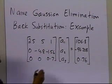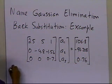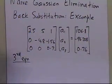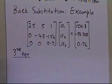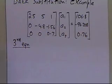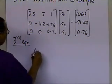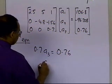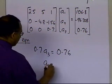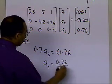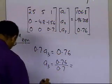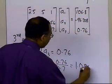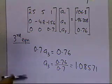We'll look at the last equation — that's how you start in back substitution, and that's why it's called back substitution, because you're going backwards. The third equation is simply 0.7 a3 equals 0.76, which gives a3 equals 0.76 divided by 0.7, and that gives 1.08571. So that's the value of a3.